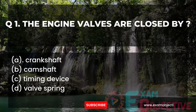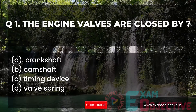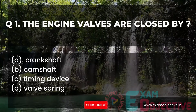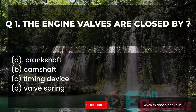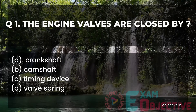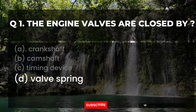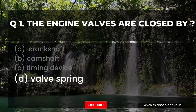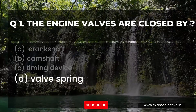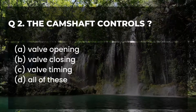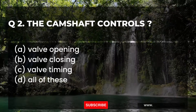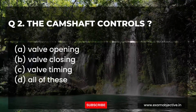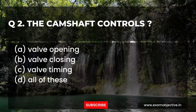Question one: The engine valves are closed by — option A: crankshaft, B: camshaft, C: timing device, D: valve spring. The answer is option D. The engine valves are closed by the valve spring.